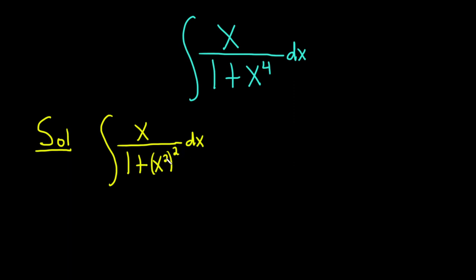The reason we did this is because now we can make a u substitution. We can let u be equal to x squared. We set u equal to x squared. Taking the derivative of both sides, on the left-hand side we get du. On the right-hand side we can use the power rule. We bring down the 2 and then subtract 1 from the exponent, so we just get x to the 1st power. Then we have our dx.